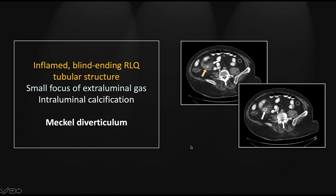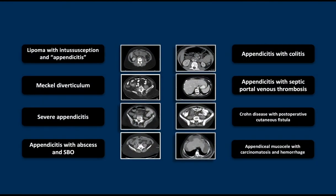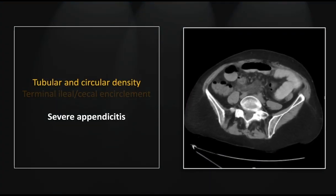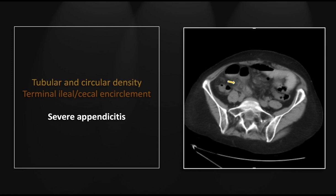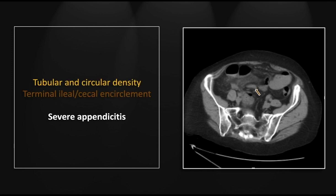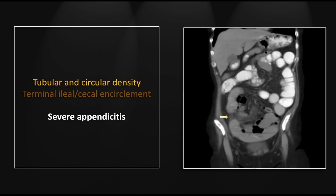Our next case is a severe appendicitis. You can get appendicitis so advanced and severely inflamed that the appendix practically disappears into just a mass of stranding. There is an arc of stranding and inflammatory change that actually forms a circle around encircled loops of terminal ileum. On the coronal, you can also appreciate the tubular and circular nature of that inflamed appendix.